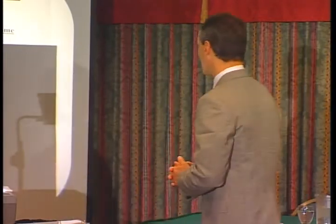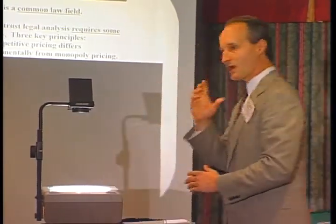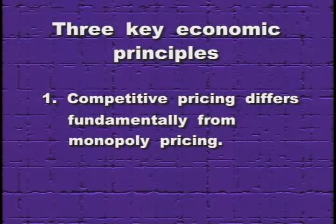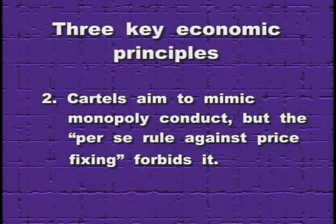Courts have got to understand some basic economics to apply modern antitrust doctrine, and there are three key economic points I'd like to make. In the time available, it's impossible to cover all of antitrust — we've had 100 years of it and I've got 90 minutes to talk. The points I'm going to make are basic and fundamental. The first is the simple but crucial point that competitive pricing is fundamentally different from monopoly pricing.